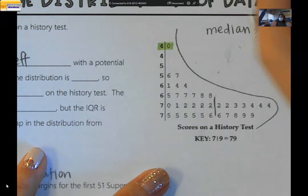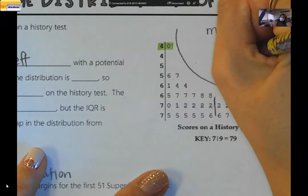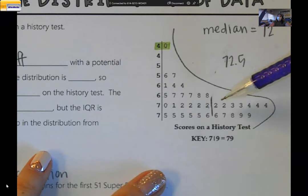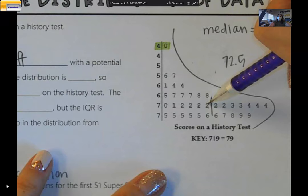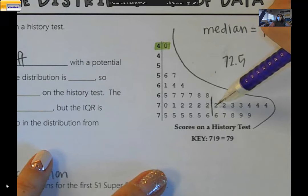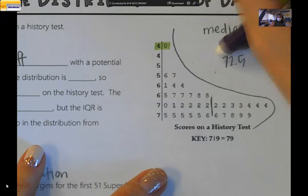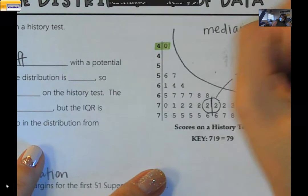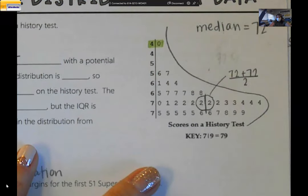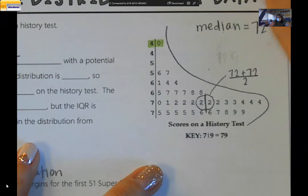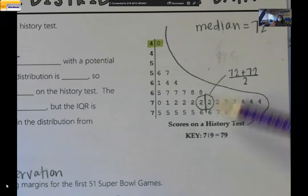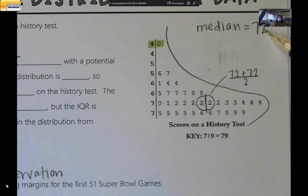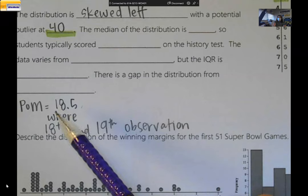Another common answer was 72.5. I understand why you think that, but you have to be clear on what you're looking at: the median is between 72 and 72. Is there a number in between those two values? No. So the median is just 72. If you use the formula, you do 72 plus 72 divided by 2, and that also gives you 72. The two biggest misconceptions were putting just '2,' putting 72.5, or putting the position of the median instead of the actual median.